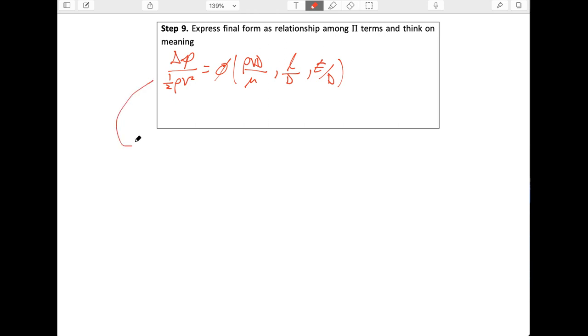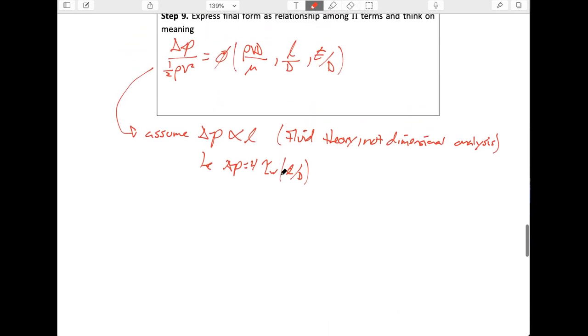So, one of the things that we know is that delta P is probably going to be proportional to the length. So, let's assume that delta P is proportional to the length. Where did that come from? Well, it came from fluid theory. Actual physics, not the dimensional analysis that we just did. So you actually know that fluid theory by now, right? Delta P looks like 4 tau wall times what? Well, L over D. And so, delta P is, in fact, proportional to L over D.